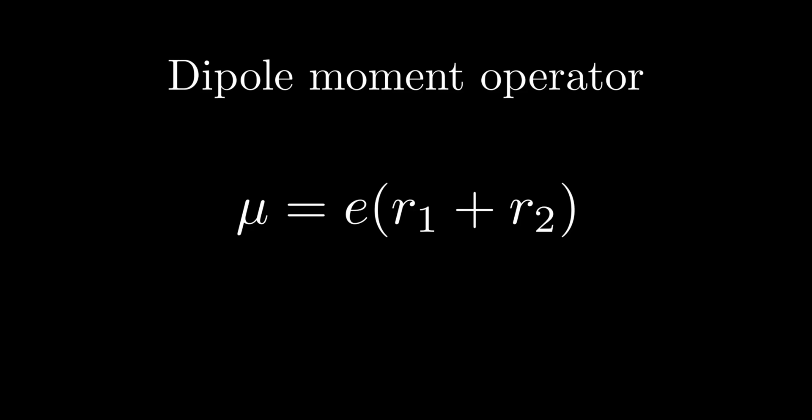R1 and R2 are the position operators of the two electrons. For light emission to occur, the transition dipole moment must be non-zero.